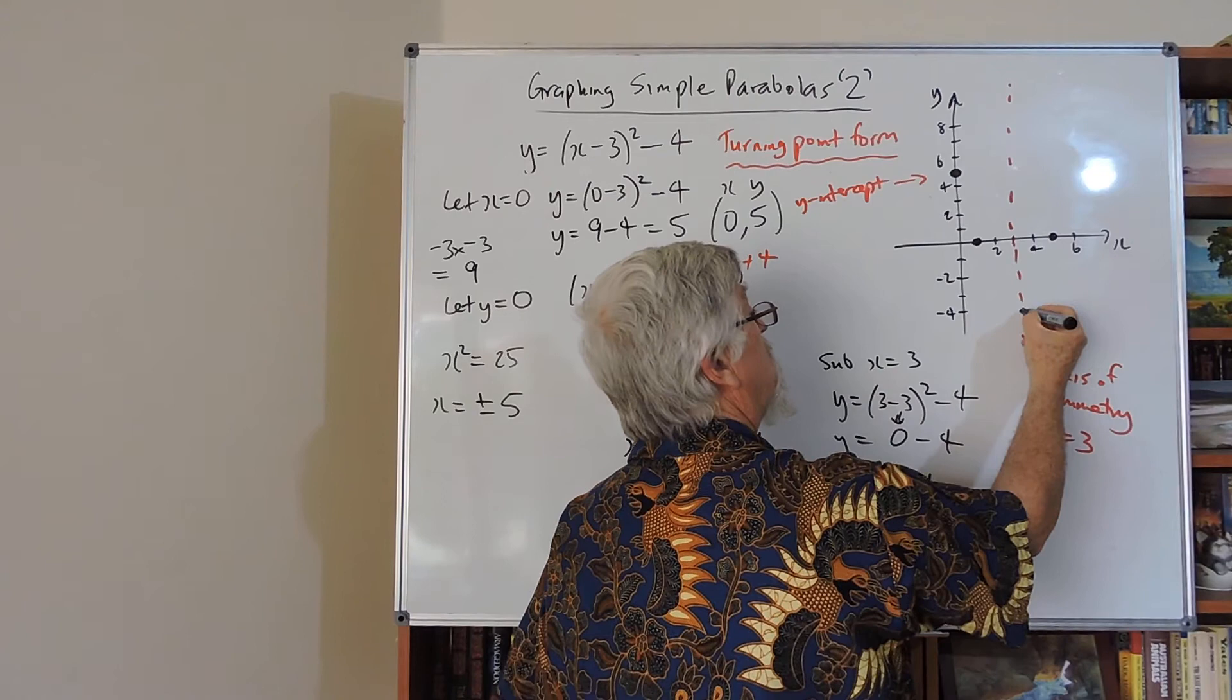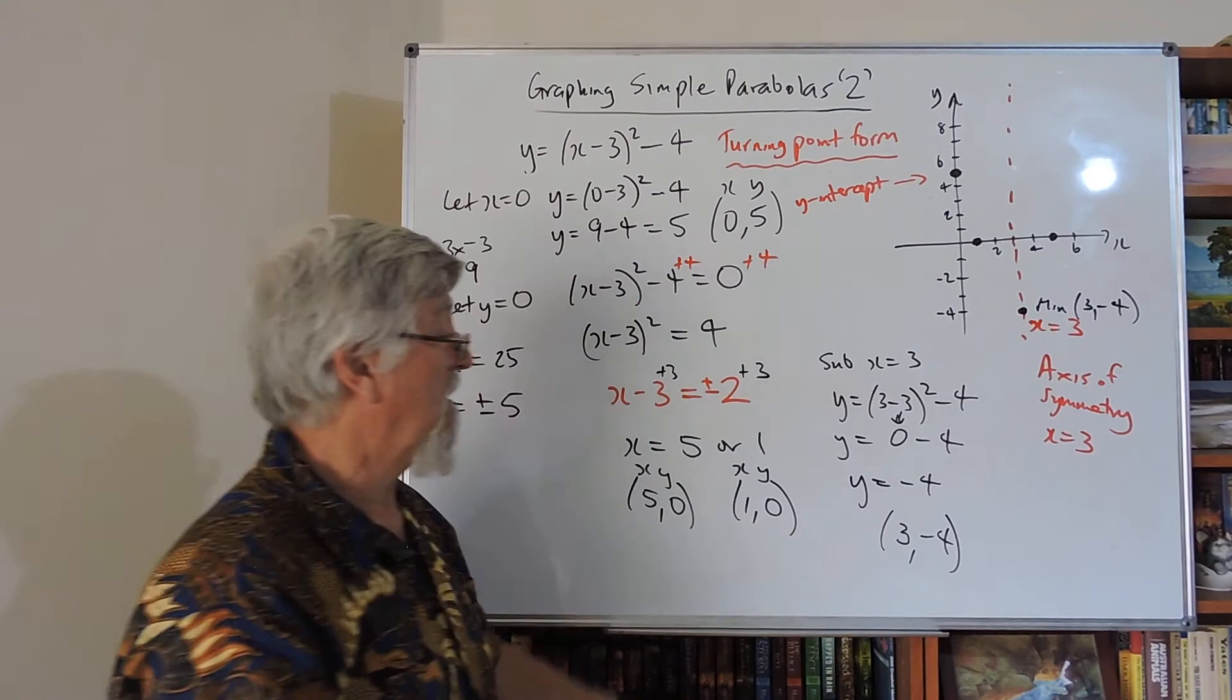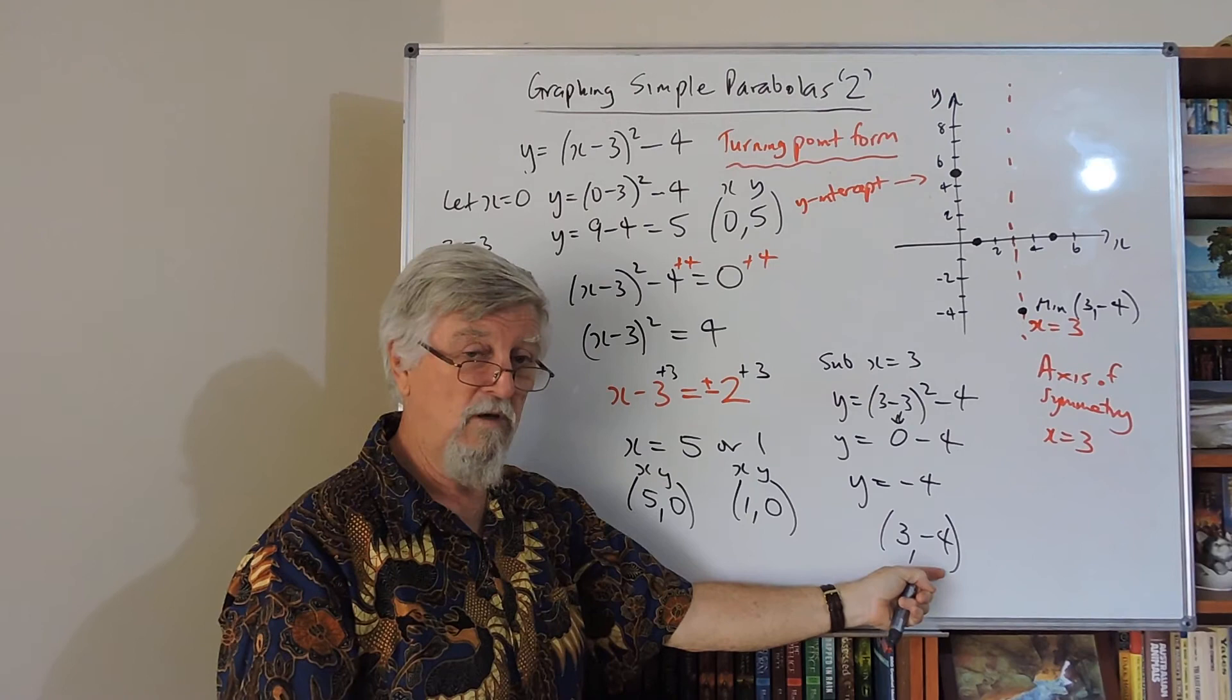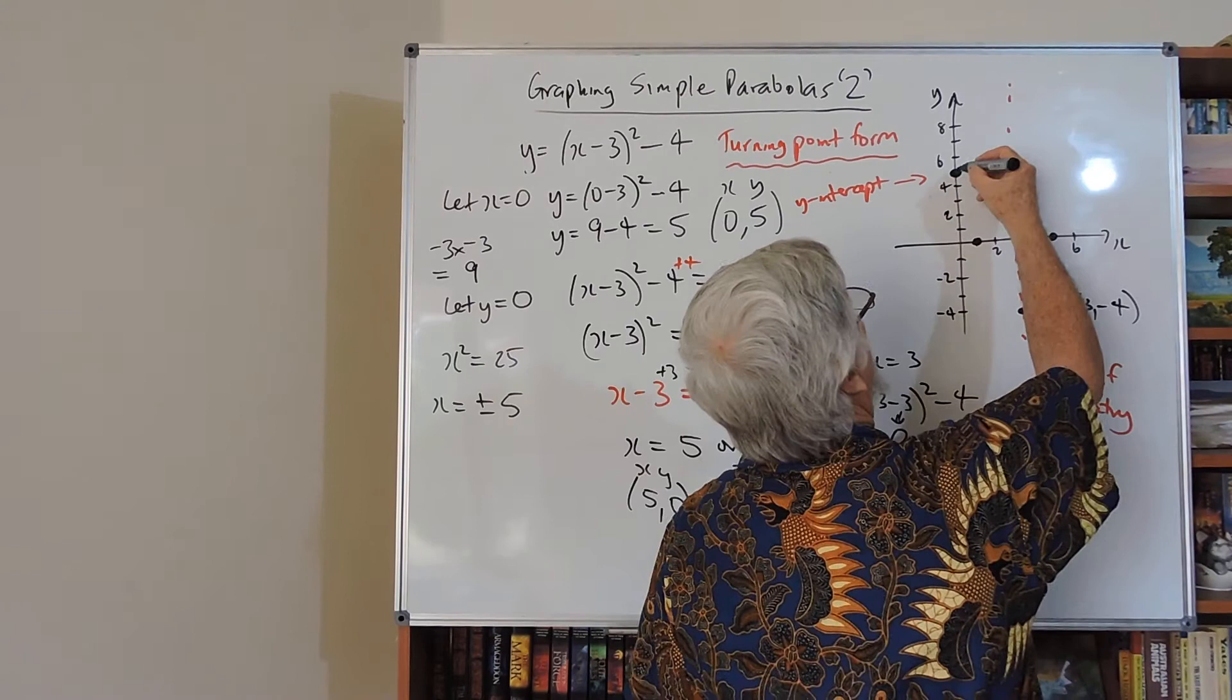3 minus 4, a minimum. Look back to the original equation. We call this the turning point form, because the opposite of that will give us a 3. That stays the same, gives us minus 4. And you've got the graph fairly simply drawn from those details there.